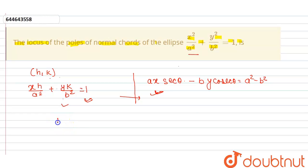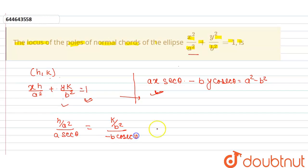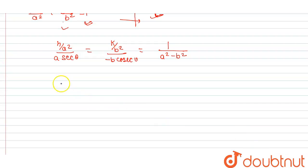Comparing the x-coefficients of the two equations: h/a² divided by a·secθ. Since secθ = 1/cosθ, equating these gives cosθ = a³ / [h(a² - b²)].